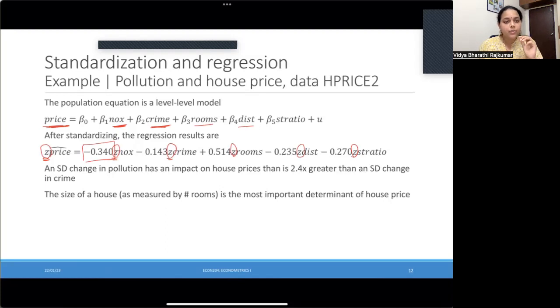This coefficient of minus 0.340, the way I'll interpret that is for a one standard deviation increase in pollution, the house price falls by 0.34 standard deviations. For a one standard deviation increase in criminal activity, house price falls by 1.4 standard deviations. For a one standard deviation increase in the number of rooms, house price goes up by 0.5 standard deviations. That's how you make the interpretations.